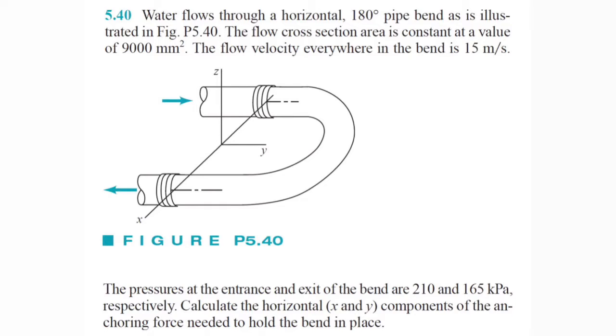The pressure at the entrance and exit of the bend are 210 and 165 kilopascals. So we got to calculate the horizontal x and y components of the anchoring force needed to hold the bend in place. So let's go ahead and get started.